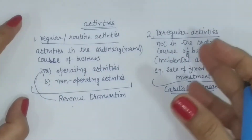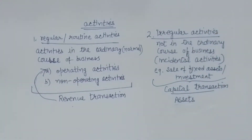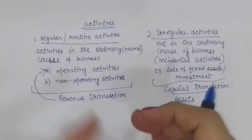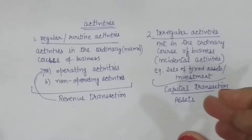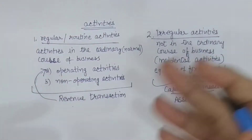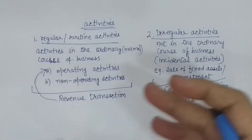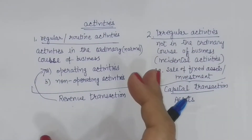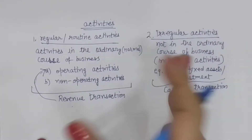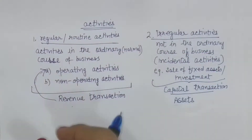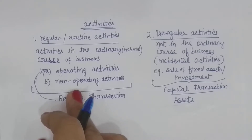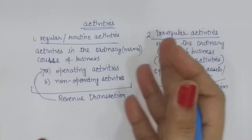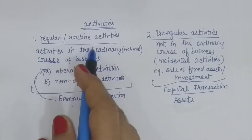Yeh normally activities ki jayengi. Jaise aap bakery goods bech rahe ho — aapka kaam hai ki aap biscuits, cakes, ya is tarhe ki bakery items purchase karte ho aur unko aage sell karte ho. Ya us business mein agar aapke paas kuch paisa available hai ya koi building ka part available hai, aap usko rent pe de dete ho, ya paisa invest karte ho — aapko income aane lagti hai. So yeh operating or non-operating activities ho sakti hain, but yeh business ke normal course mein hain, routine mein hoti hain, recurring hain. Isliye inhein hum regular bolte hain.